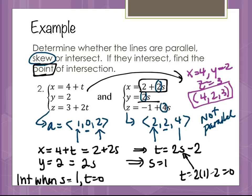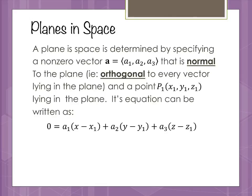In three-dimensional space, when relating an orthogonal vector to a plane, we use the word normal. A plane in space is determined by specifying a non-zero vector normal to the plane — orthogonal to every vector lying in the plane — and a point p1 lying in the plane. Its equation is: 0 = a1(x minus x1) + a2(y minus y1) + a3(z minus z1).